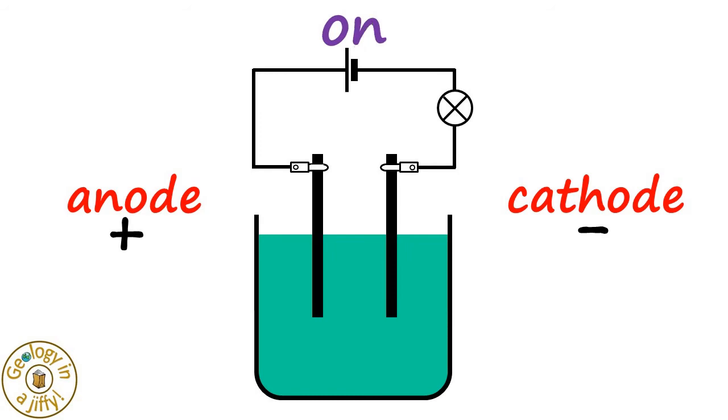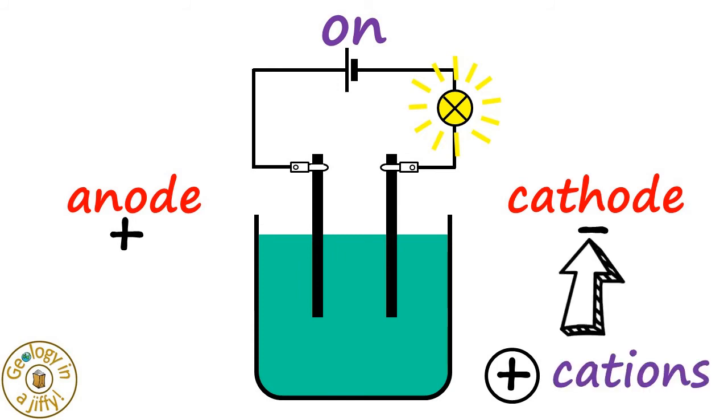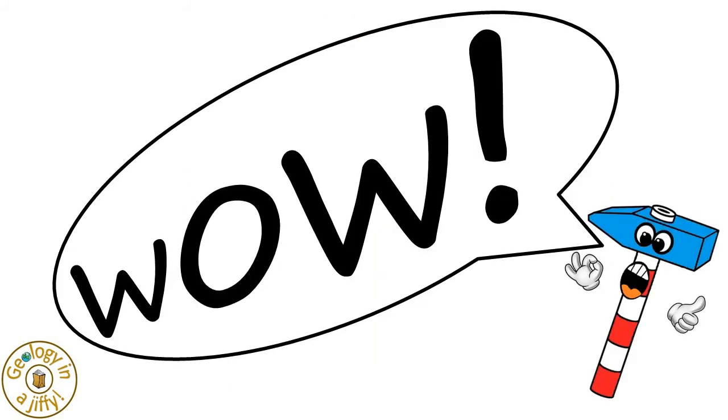When we turn the switch on, the lamp lights, as a current is now flowing, because the positively charged cations are attracted to the oppositely charged negative cathode, and the negatively charged anions are attracted to the oppositely charged positive anode. Wow!